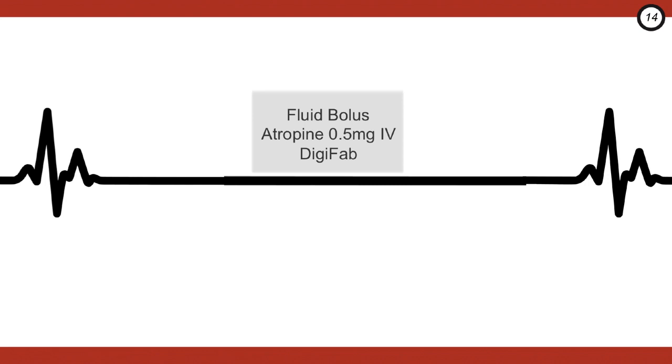There's little role for pacing because of the increased myocardial irritability, and there's a risk of deterioration into a malignant dysrhythmia. But if atropine has failed and you're waiting for digifab and the patient is hypotensive, it may be considered, but make sure you go with a very low energy.